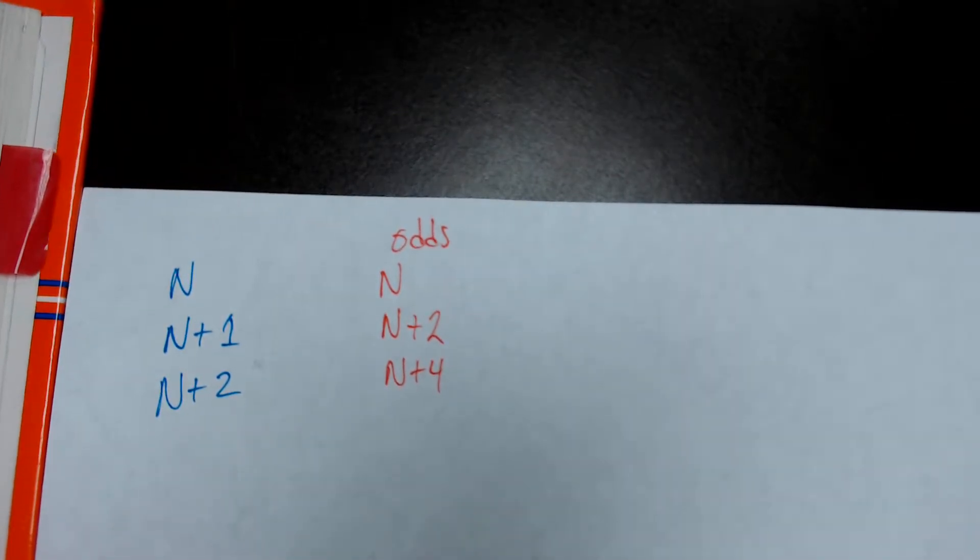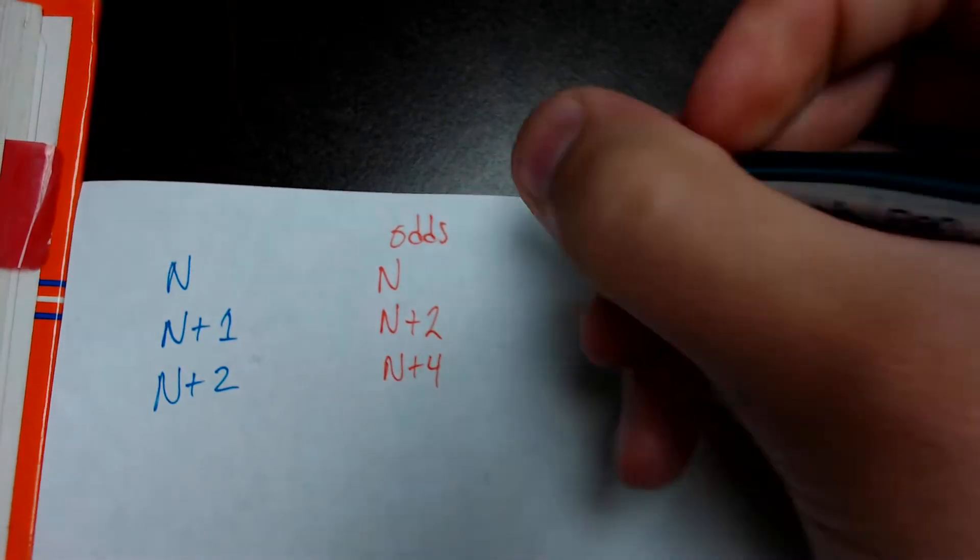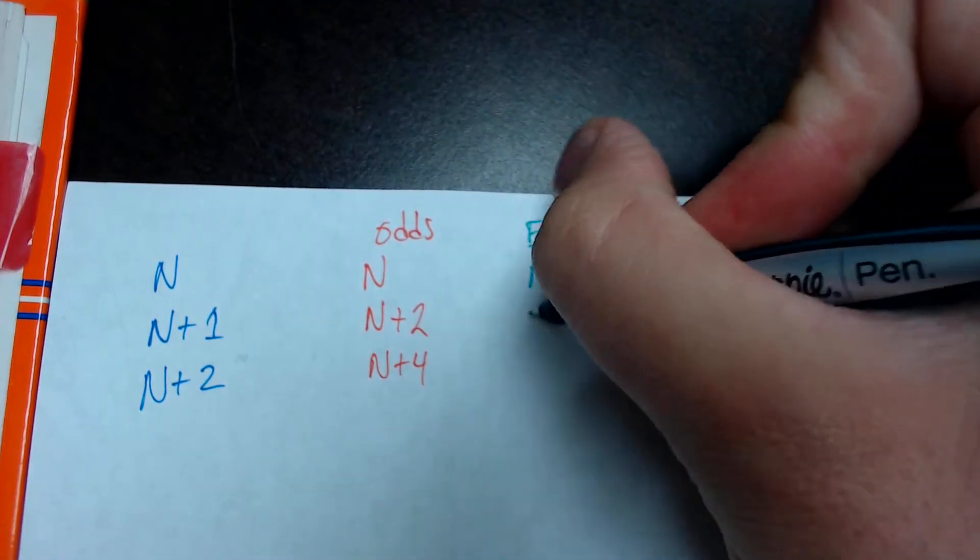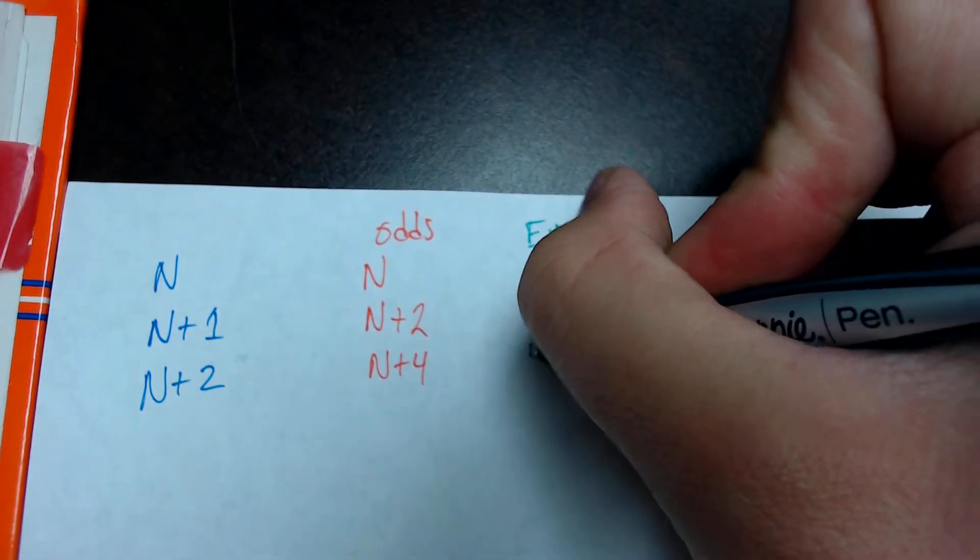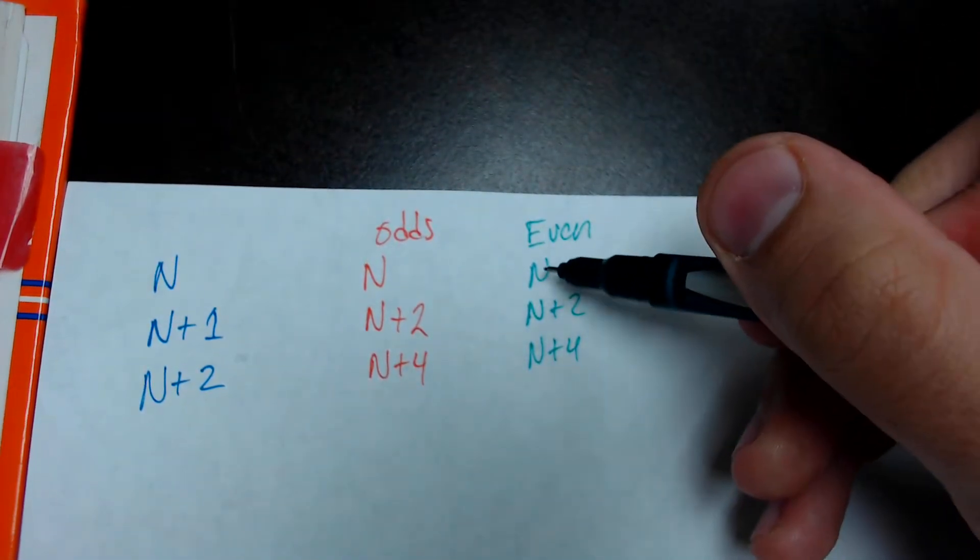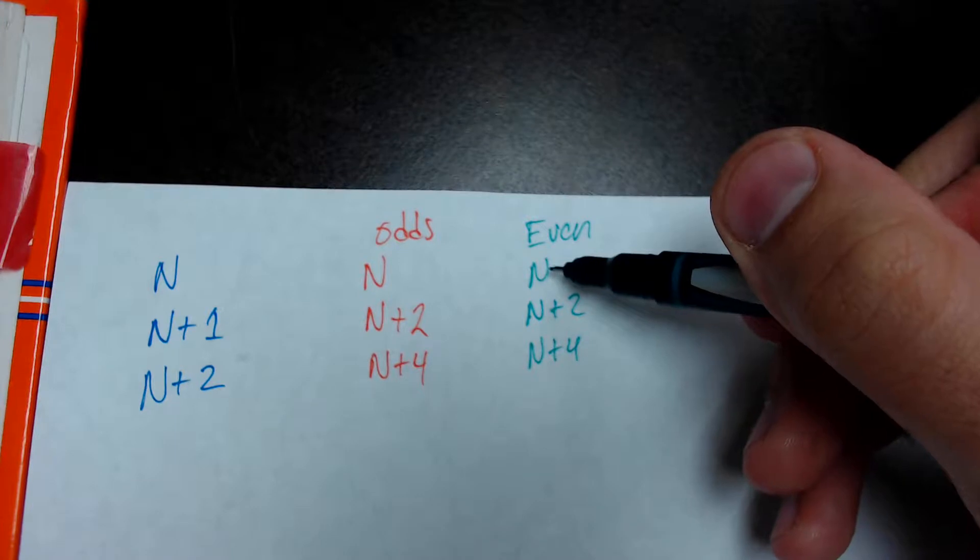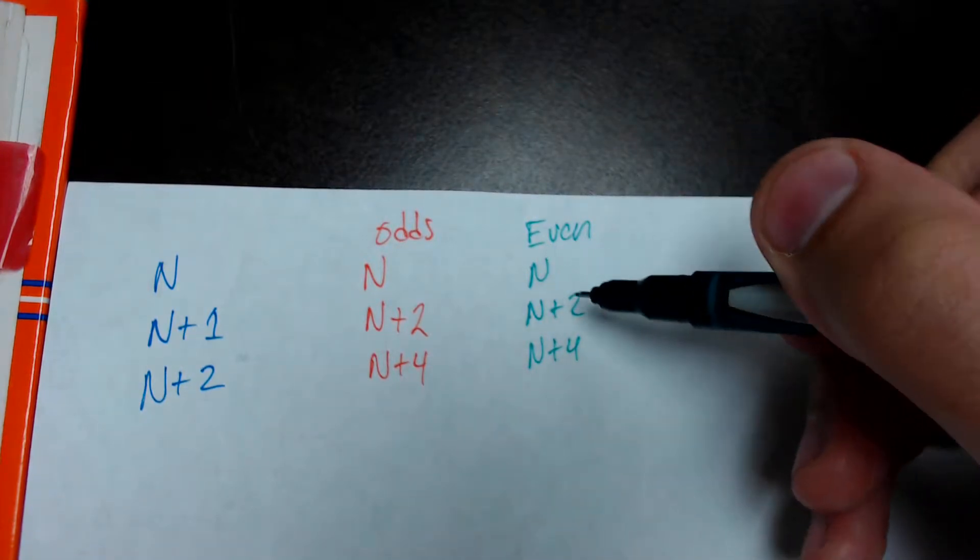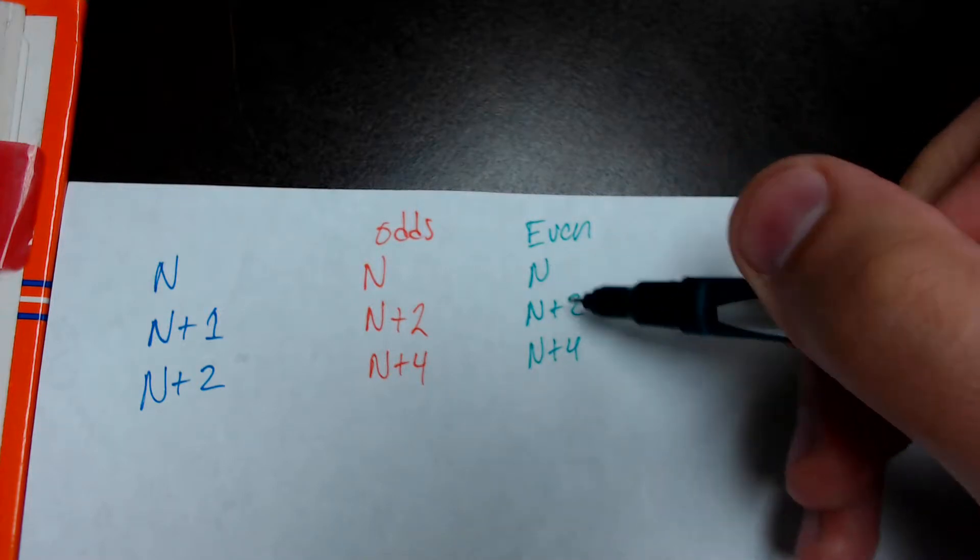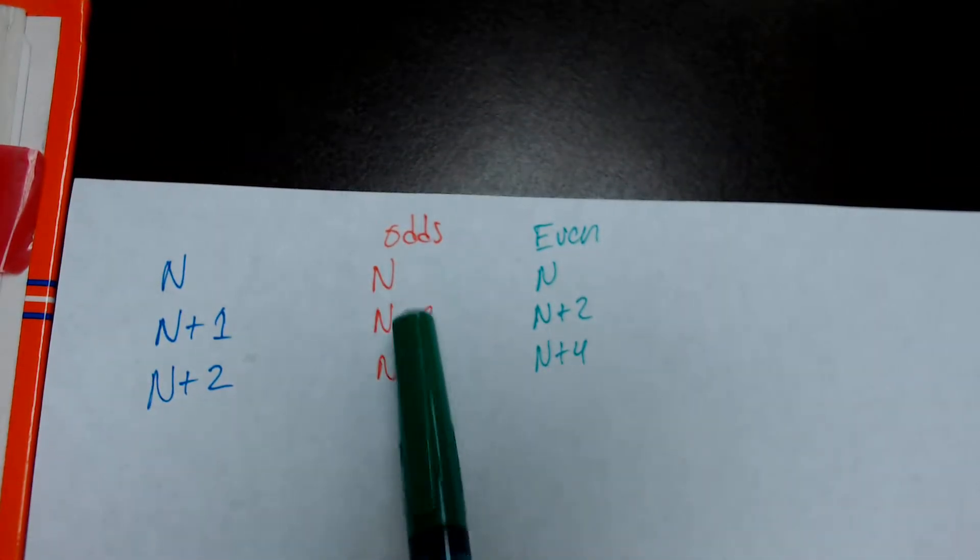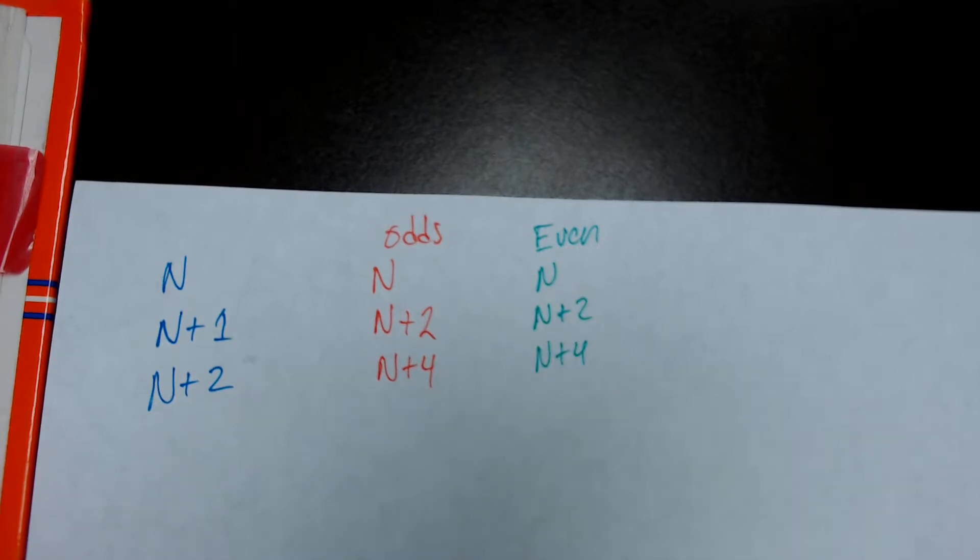Now, this is what tricks people out. For even numbers, we do the exact same thing, right? And the reason why is because if our first number is 2, in order to get to the next number, 4, 2 plus 2 is 4. Then the next number would be 6. 2 plus 4 is 6. Now, the reason why even and odd numbers have the exact same pattern of unknowns is because of the distance between integers.